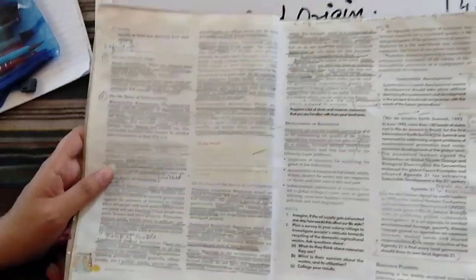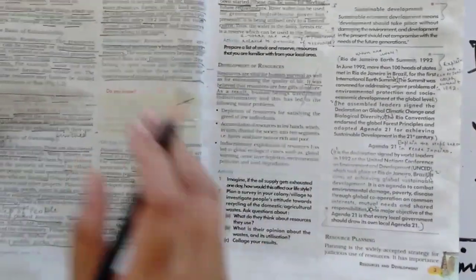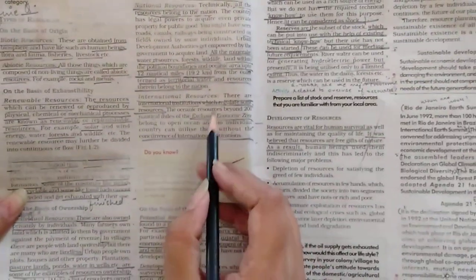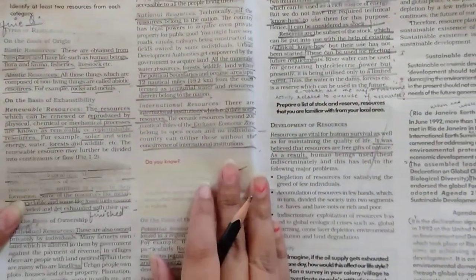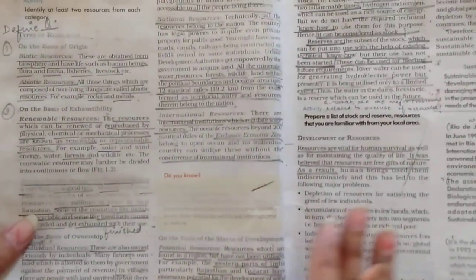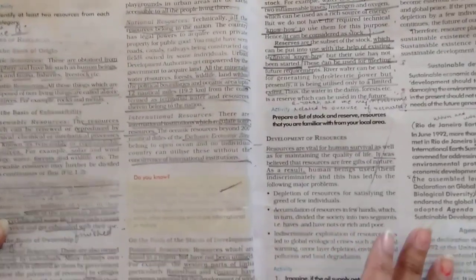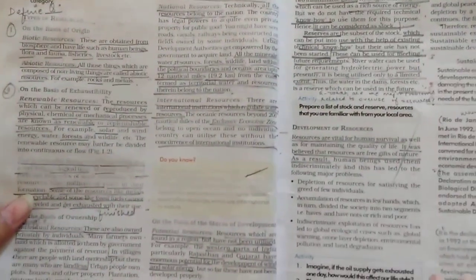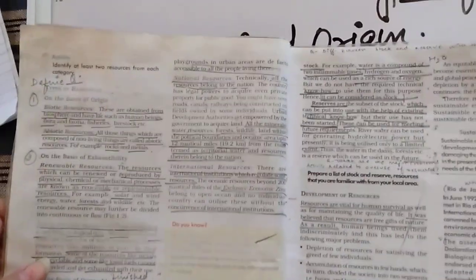Then we talk about international resources. What are international resources? The international resources are those which regulate by some international institutions. Those resources are included in exclusive economic zones. And without the permission of those international institutions, we cannot use those particular resources which are not considered in the boundary. They are open and no nation can have an individual right on those particular resources.